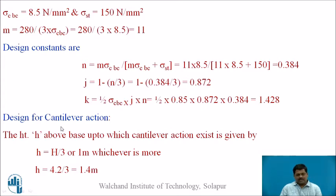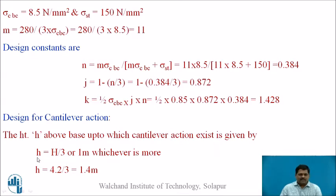The design of cantilever action is the most important parameter because the wall has a rigid base. A rigid base means the wall is laterally restrained, so there is no free cantilever effect but hoop tension also acts. The height above the base up to which cantilever action exists is given by H/3, and small h = 1.4 metres.